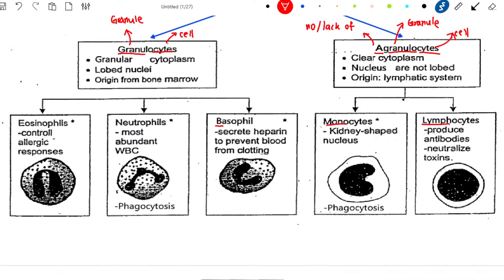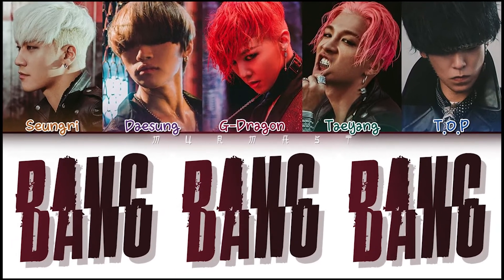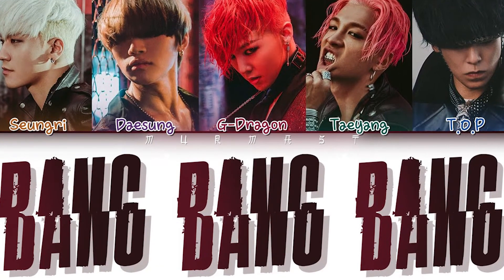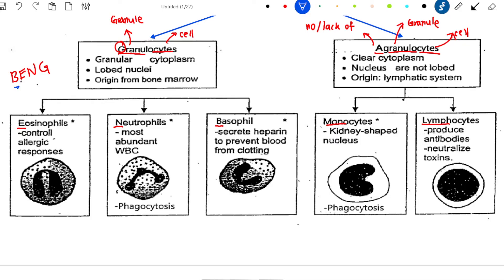Get the B from Basophils, get the N from Neutrophils, get the E from Eosinophils — they'll form a thing called BNE. Then take the G from Granulocyte, and they'll give you the word BANG. So BANG belongs to Granulocyte.